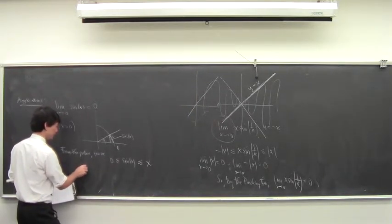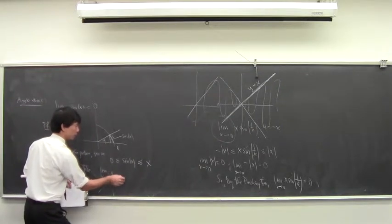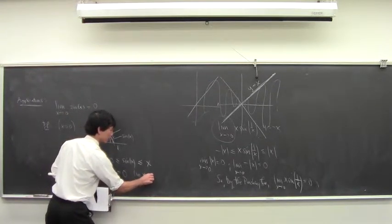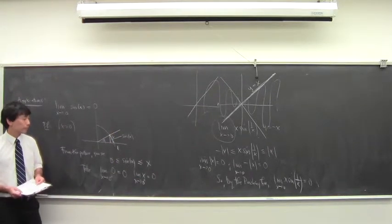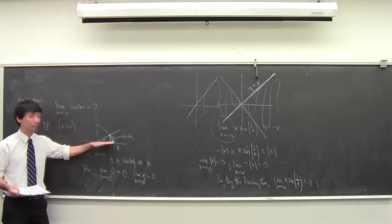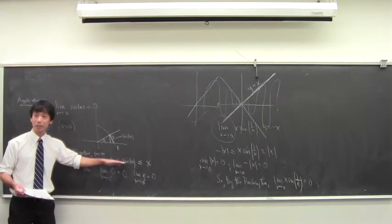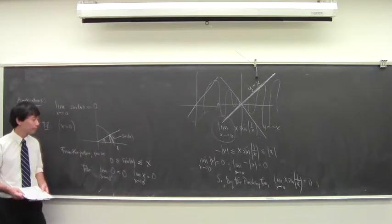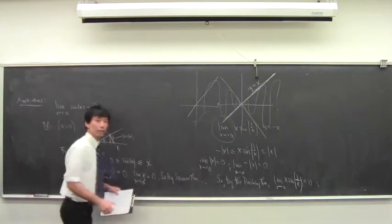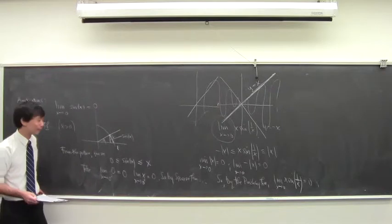Taking the limit: the limit of 0 as x approaches 0 is 0, and the limit of x as x approaches 0 is also 0. So by the pinching theorem the limit of sine(x) from the positive side is 0. It's good enough to only do it from one side? No, you need to do it from both sides — but the other side works basically the same.